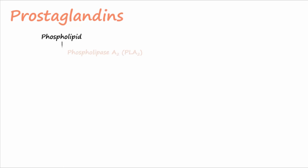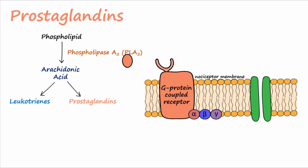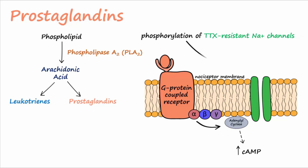Prostaglandins are released from enzymatic breakdown of inflammatory cell membranes and bind to G protein-coupled receptors, which increases cyclic AMP inside nociceptors. Prostaglandins also cause phosphorylation of certain tetrodotoxin-resistant sodium channels, which causes these channels to open at lower membrane potentials, thus sensitizing the nociceptors to make them more readily activated.